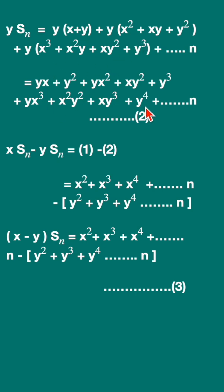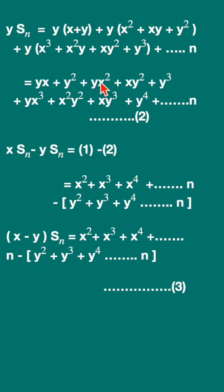Now compute x·S_n minus y·S_n. Most terms will get cancelled, and you are only left with a simplified expression like this.